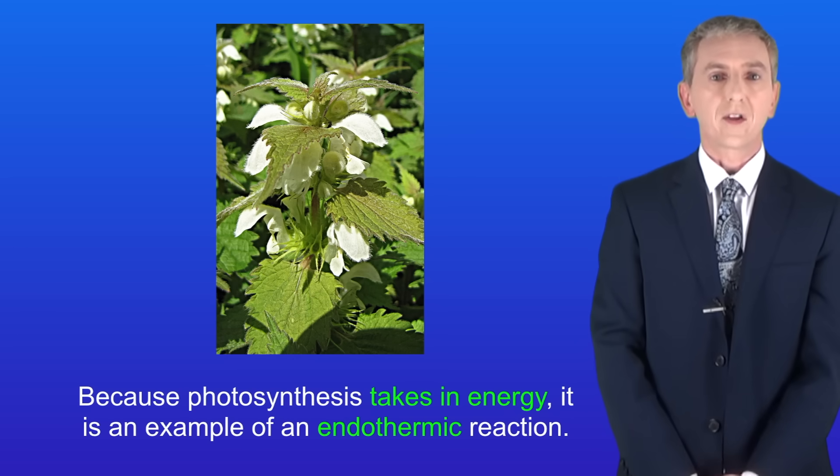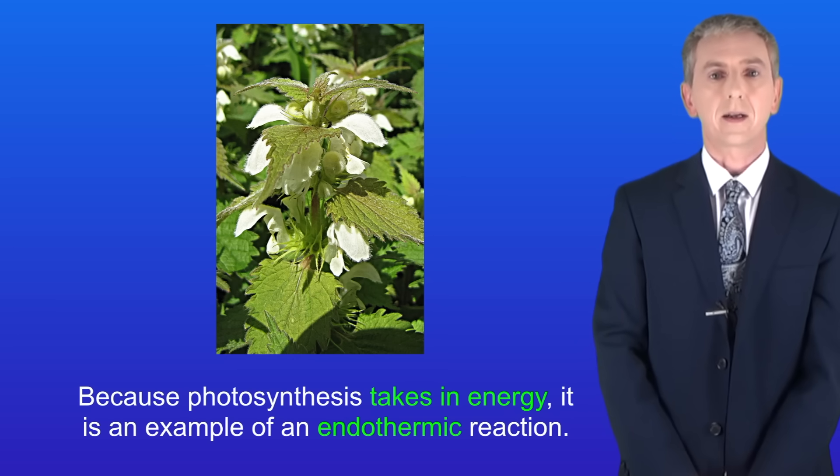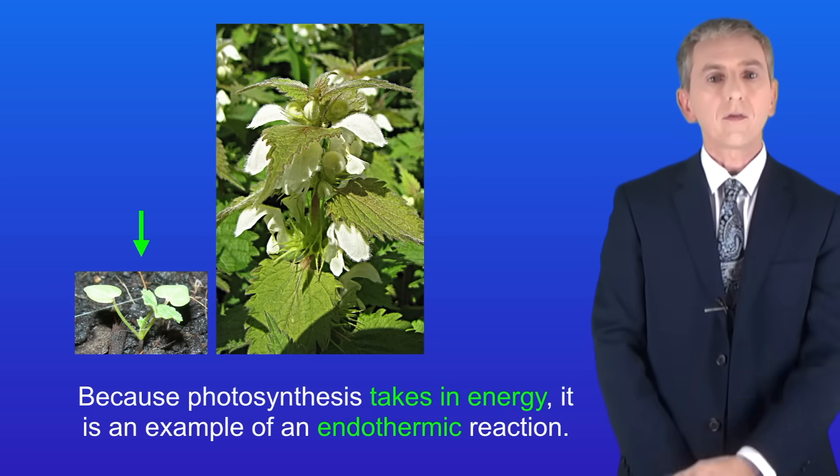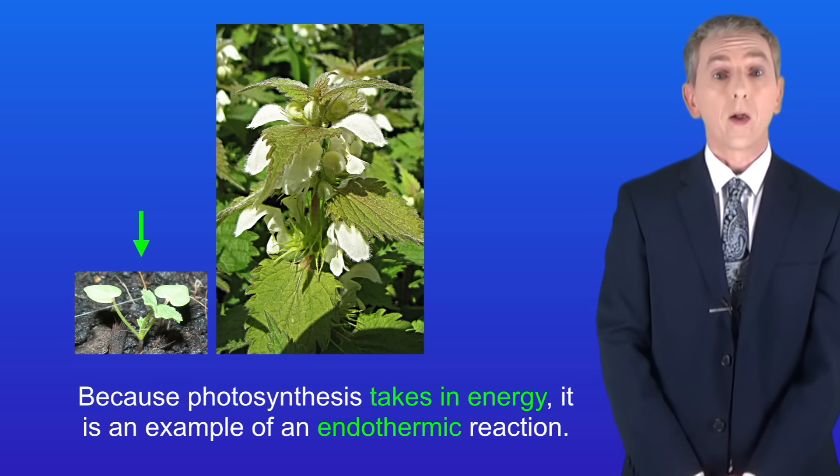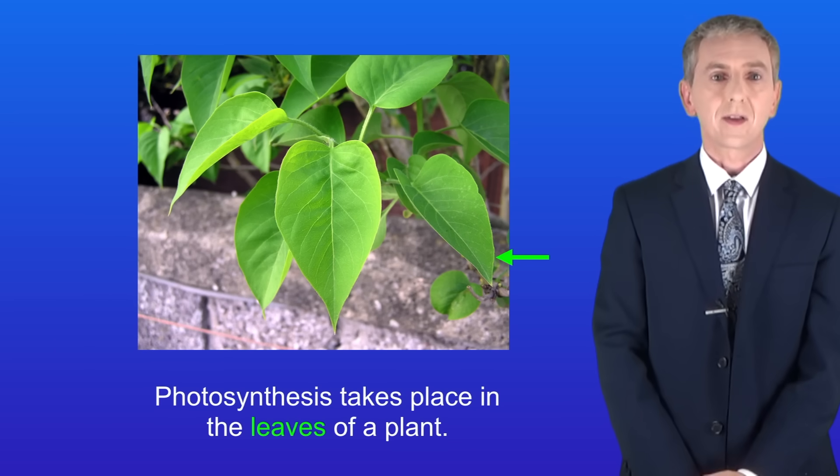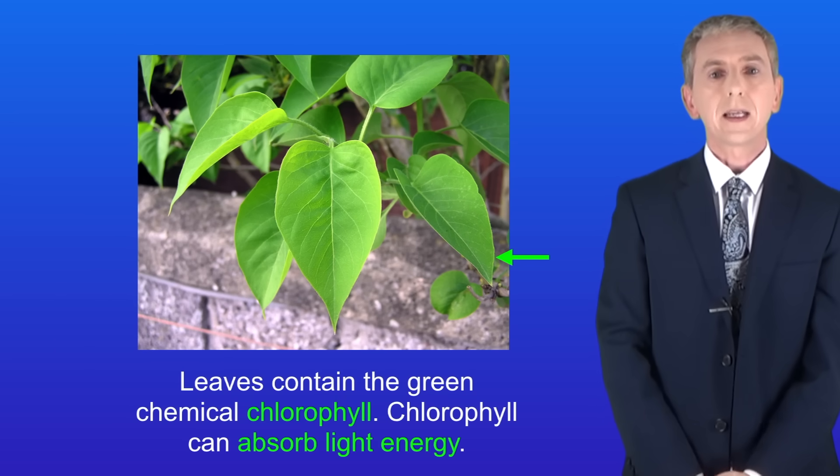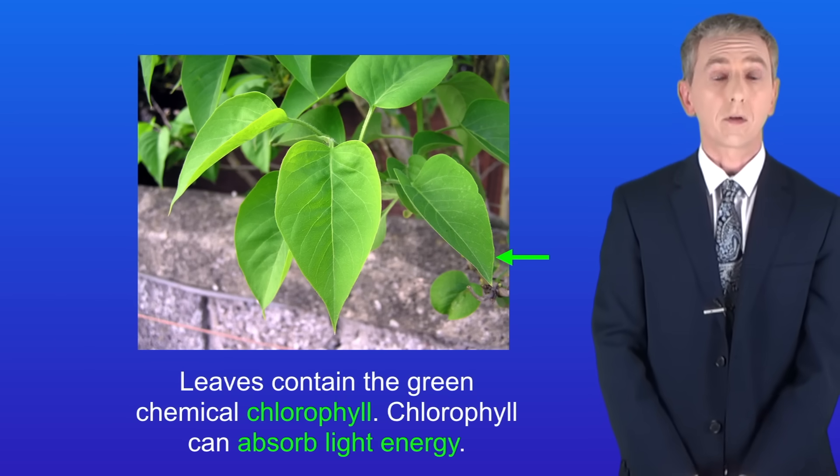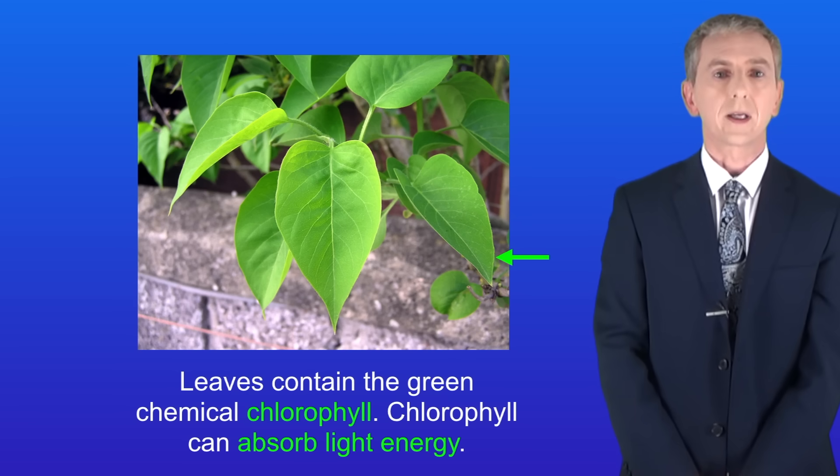If you imagine that this plant grew from a tiny seedling like this one, all of the energy that the seedling needed to grow came from the light energy trapped by photosynthesis. Photosynthesis takes place in the leaves of a plant and leaves contain the green chemical chlorophyll. Chlorophyll can absorb light energy.